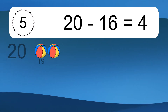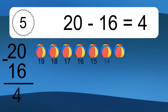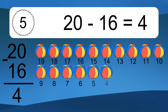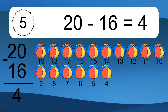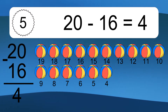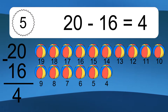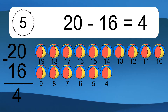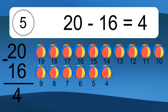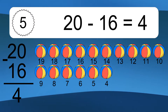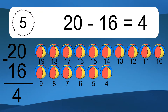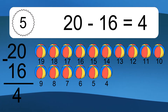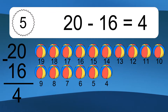20 minus 16 equals 4. Let's count it: 19, 18, 17, 16, 15, 14, 13, 12, 11, 10, 9, 8, 7, 6, 5, 4.